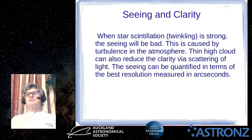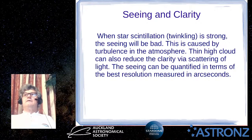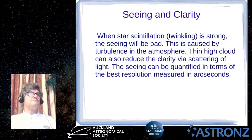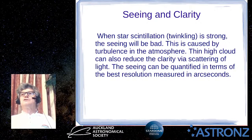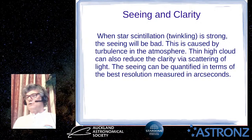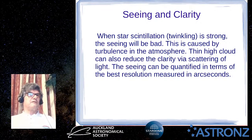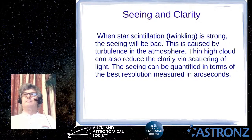Sky conditions are affected by turbulence and weather rather than artificial lighting. If you see stars twinkling a lot — called scintillation — and that's really strong, the seeing is going to be bad. When looking at stars in a telescope under those conditions the images will be dancing around, and it's really not great for viewing.